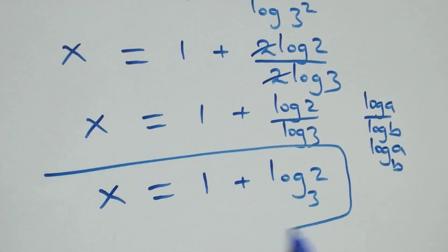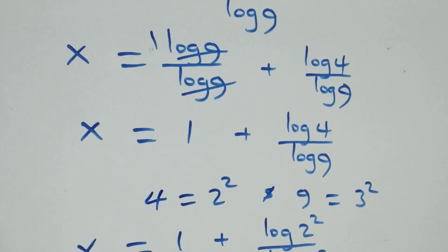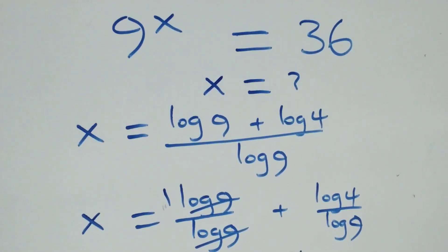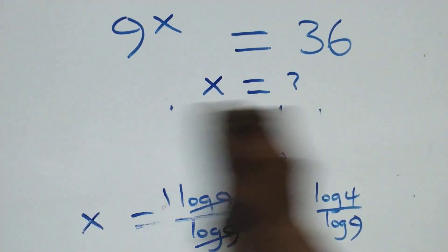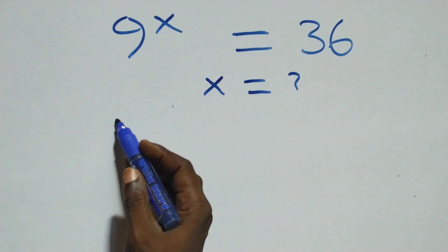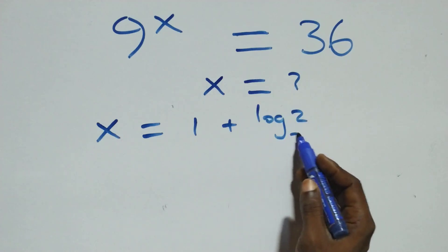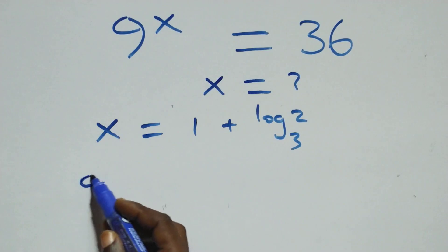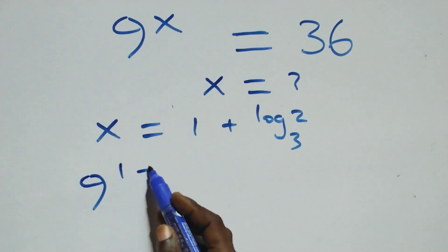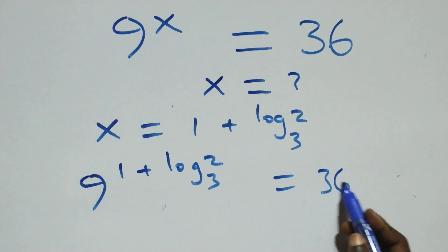So the value of x is 1 plus log₃2. Let's verify that this satisfies the original problem by substituting x equals 1 plus log₃2 back in, giving 9 raised to power (1 + log₃2). We check whether this equals 36.